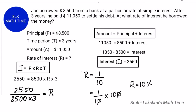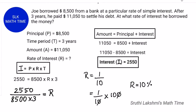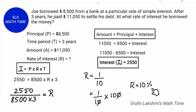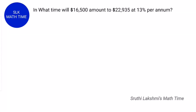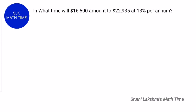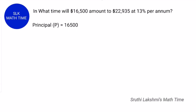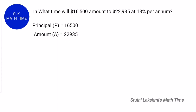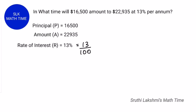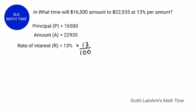So Joe borrowed the money at a rate of interest of 10%. Let's see another example. In what time will $16500 amount to $22935 at 13% per year? First let's list the given data: the principal is $16500, the total amount is $22935, and the interest rate is 13% per year, written as 13 by 100.